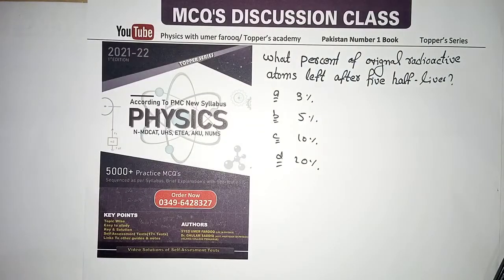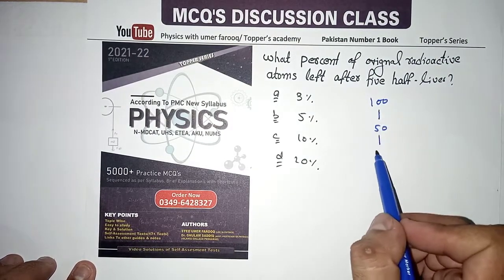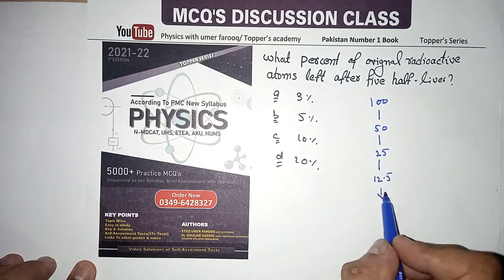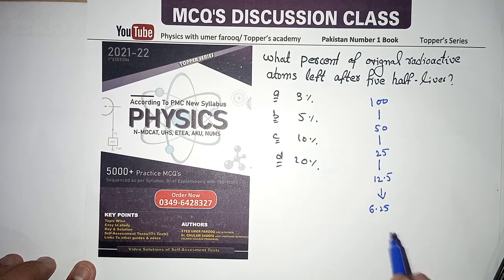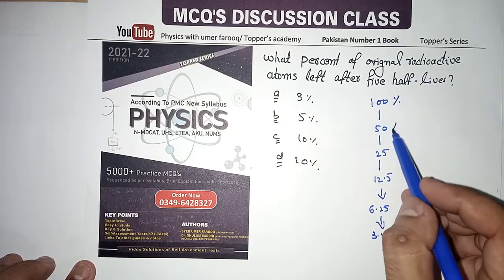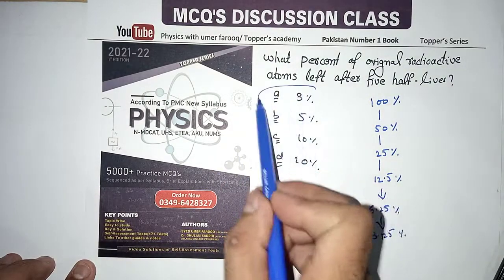Next MCQ: what percent of original radioactive atoms are left after five half-lives? Starting at 100%, after first half-life: 50%, second: 25%, third: 12.5%, fourth: 6.25%, fifth: 3.125%. So after five half-lives the correct option is 3.125%, option number A.